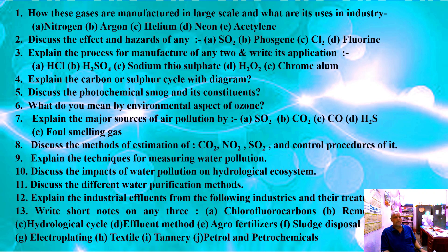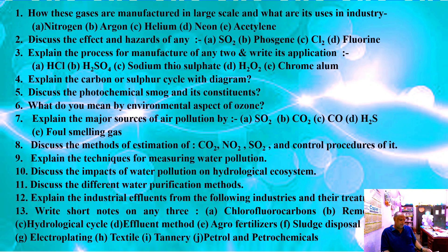Question number thirteen — write short notes on any three: A) chlorofluorocarbons, B) removal of sulfur from coal, C) hydrological cycle, D) effluent method, E) agro fertilizers, F) sludge disposal, G) electroplating, H) textile, I) tannery, and J) petrol and petrochemicals.